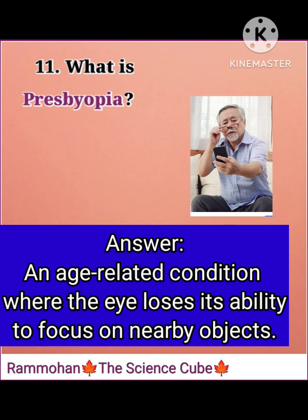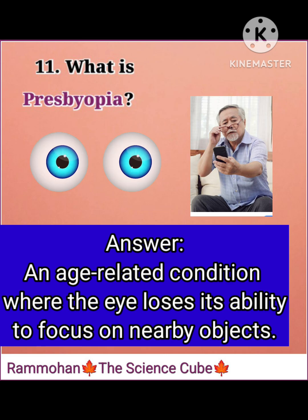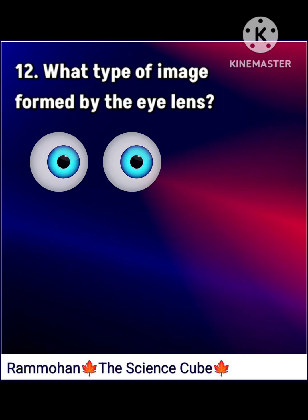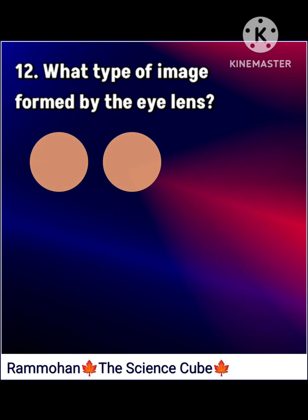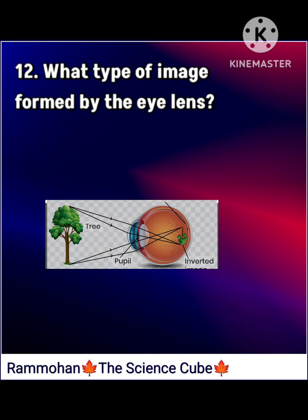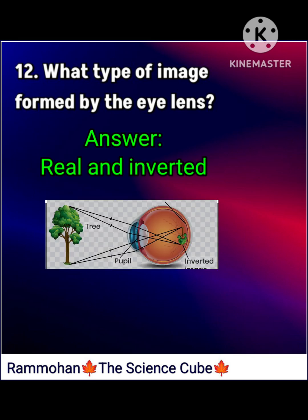Eleventh question: what is presbyopia? Answer: an age-related condition where the eye loses its ability to focus on nearby objects. Twelfth question: what type of image is formed by the eye lens? Answer: real and inverted.